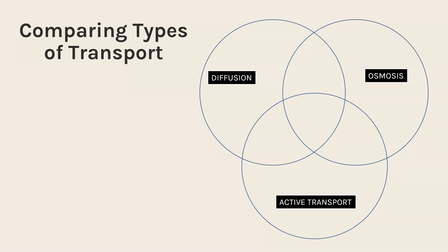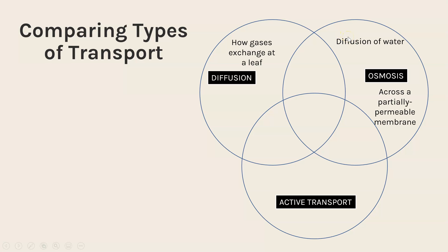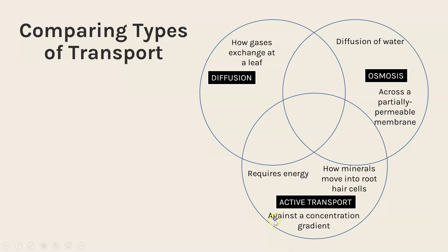The final thing you could be asked about, linked to active transport but also diffusion and osmosis — I'll link those videos at the end — is to compare similarities and differences between the three. Using this Venn diagram: diffusion is how gases exchange at a leaf; osmosis is only the movement of water, by diffusion, across a partially permeable membrane; active transport is the only one that requires energy, the only one that shows how mineral ions move into root hair cells, and the only one that goes against the concentration gradient.